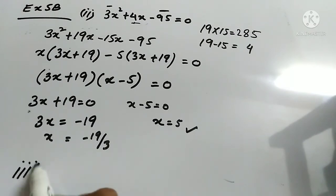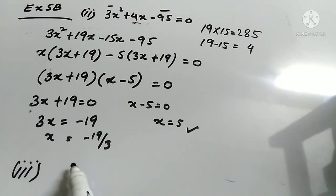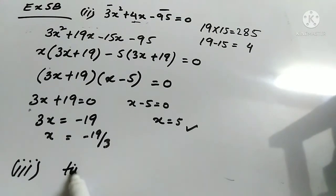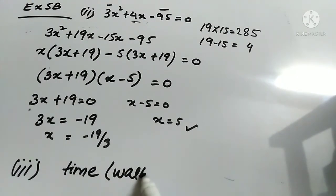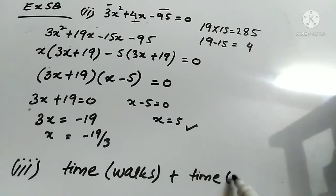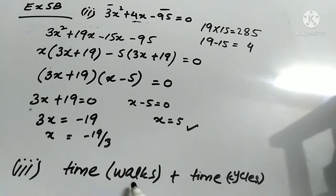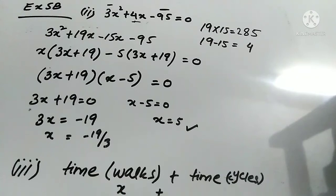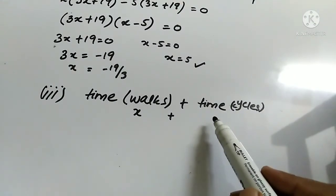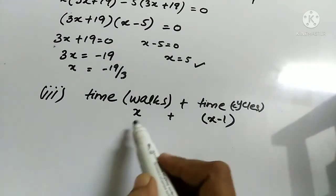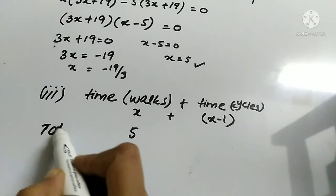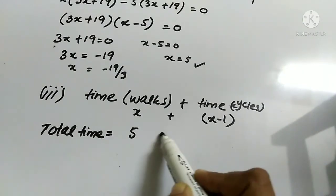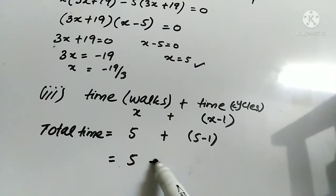Part 3 asks us to find the total time taken for her entire journey. Time when she walks is x hours, and time when she cycles is (x − 1) hours. Substituting x = 5: total time = 5 + (5 − 1) = 5 + 4 = 9 hours. So the answer is 9 hours.